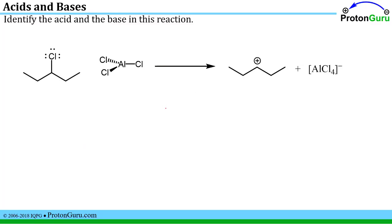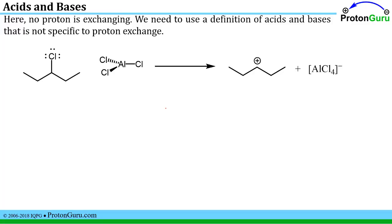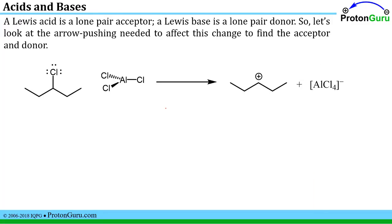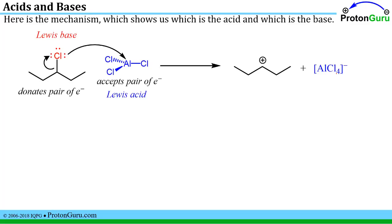Here is the same type of question, but now we are not exchanging a proton, so we need to use a different definition — specifically the Lewis definition of an acid and base. A Lewis base is a lone pair donor and a Lewis acid is a lone pair acceptor. We look at the arrow pushing needed to affect the change: the aluminum needs to pick up a chlorine and a negative charge, so we break the carbon-chlorine bond and donate the electron pair to the aluminum to make it a negatively charged tetrachloroaluminate.